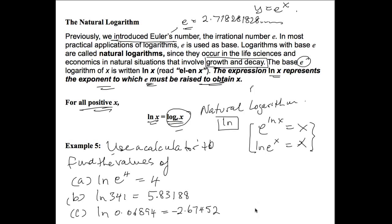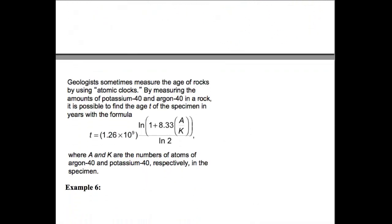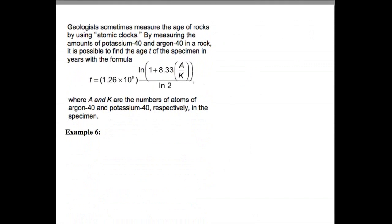Now let's look at some application models using the natural log function. The first application has to do with geology. Geologists sometimes measure the age of rocks using atomic clocks. By measuring amounts of potassium-40 and argon-40 in a rock, it is possible to find the age T in years using: T = 1.26 × 10⁹ × [ln(1 + 8.33·(A/K)) / ln(2)], where A and K are the numbers of argon-40 and potassium-40 respectively.